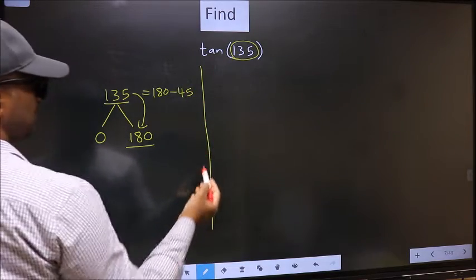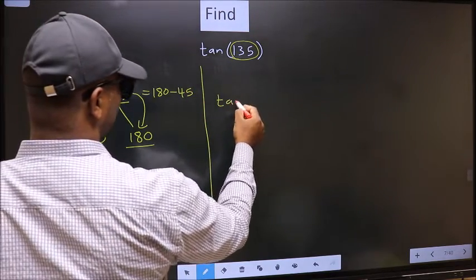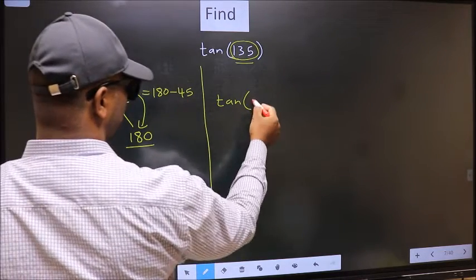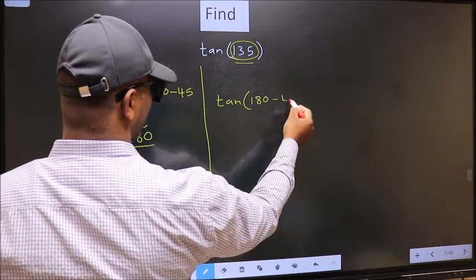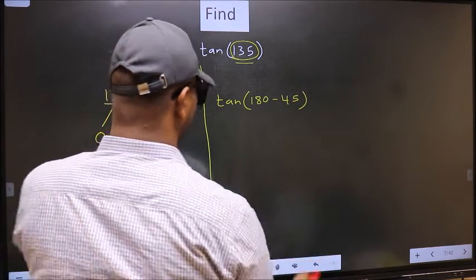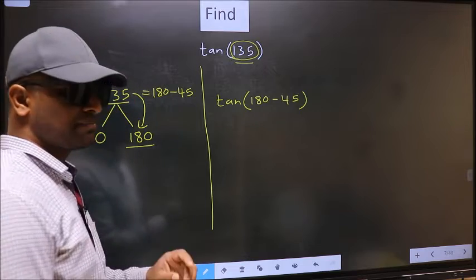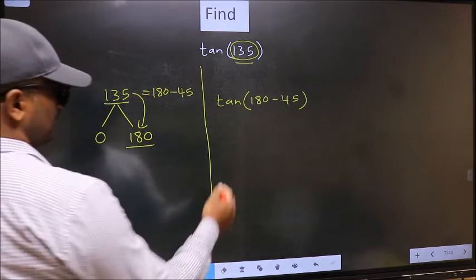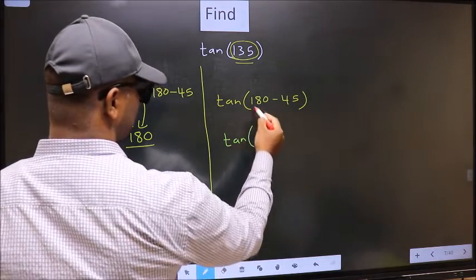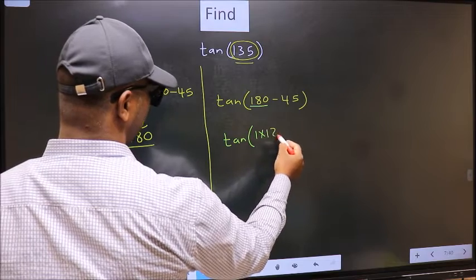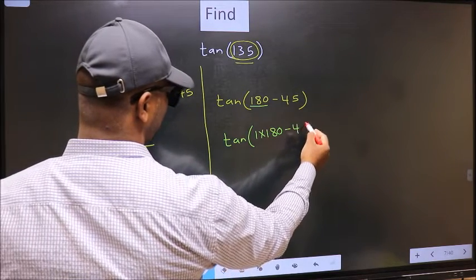So this will become tan. In place of this, we write this: 180 minus 45. This is your step 1. Next, tan. In place of 180, now we should write 1 into 180 minus 45.